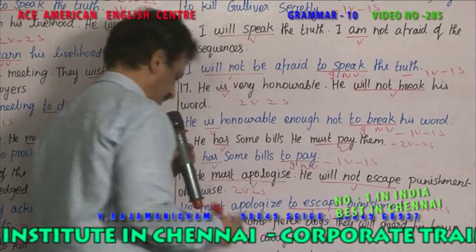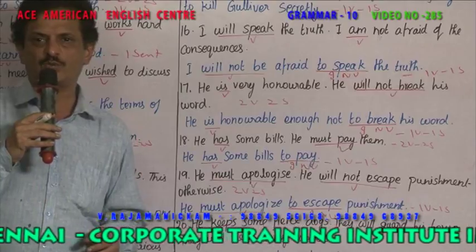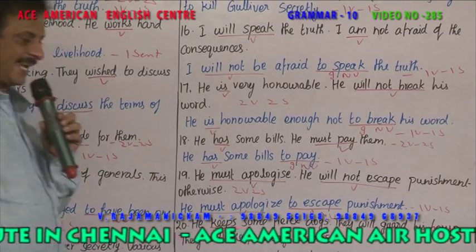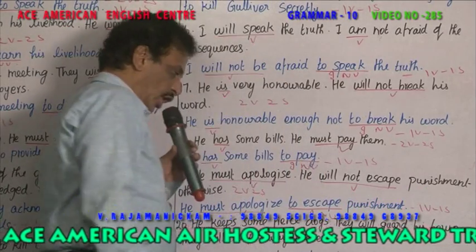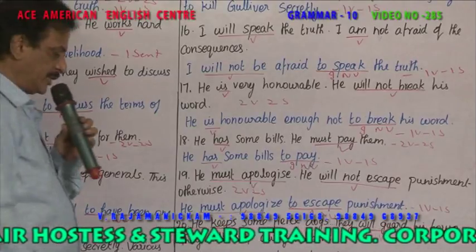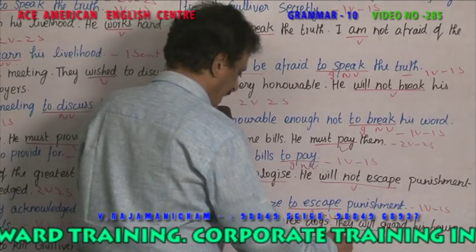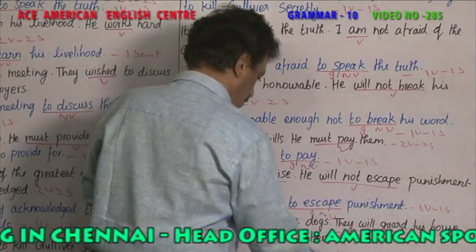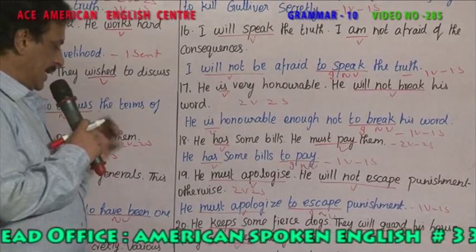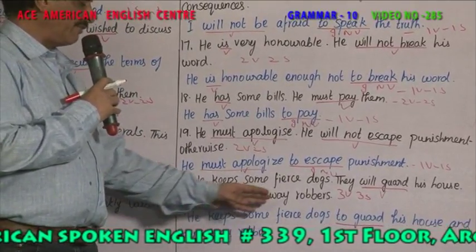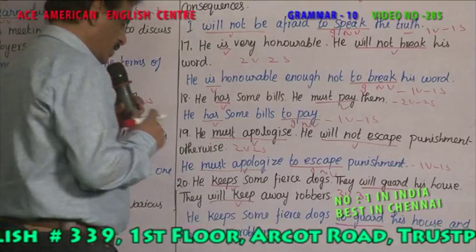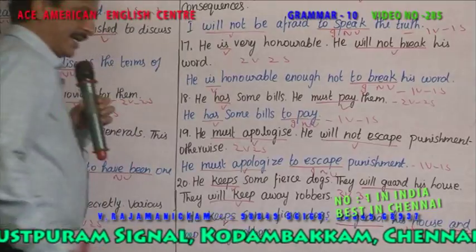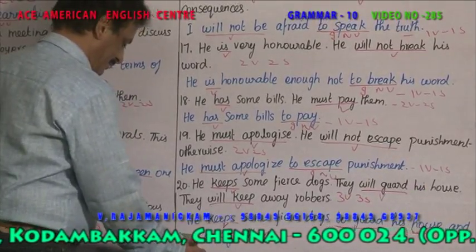Example 15: 'He keeps some fierce dogs' — dangerous dogs that will bite; 'keeps' is the verb. 'They will guard his house' — 'will guard' is a verb. 'They will keep away robbers' — 'will keep' is a verb. Three verbs, three sentences. Combined: 'He keeps some fierce dogs to guard his house and keep away robbers.' 'Keeps' is the one verb; 'to guard' is the infinitive. One sentence, with 'and' joining the two purposes.